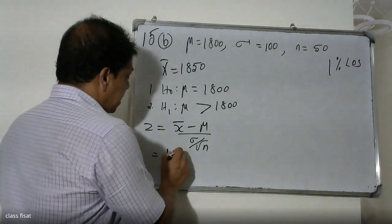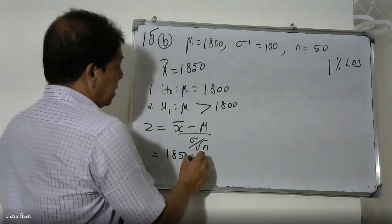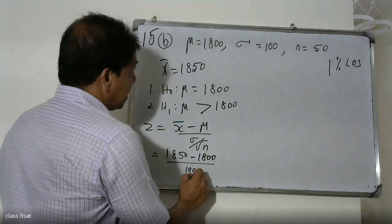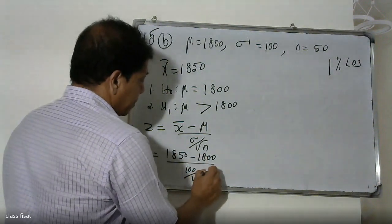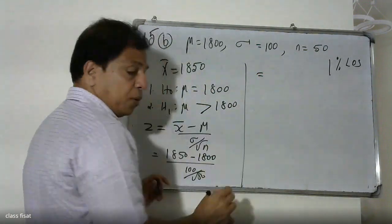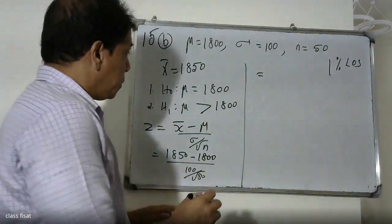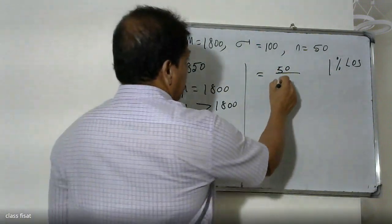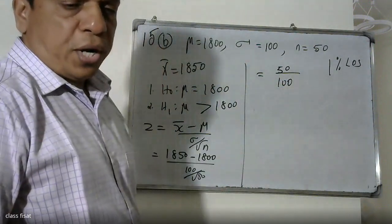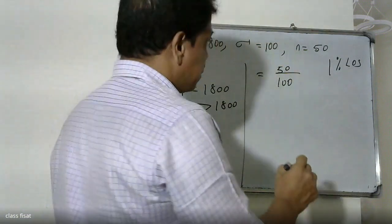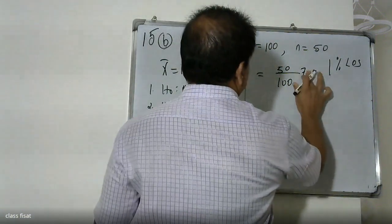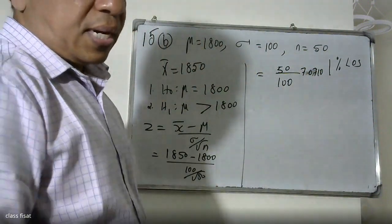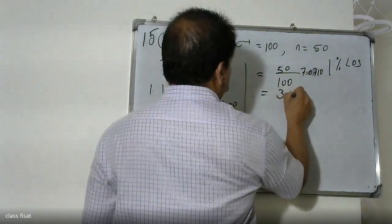Calculating the z-value: x̄ = 1850, μ = 1800, σ = 100, n = 50. So z = (1850 − 1800) / (100 / √50) = 50 / 7.071 = 3.54. The calculated z-value is 3.54.